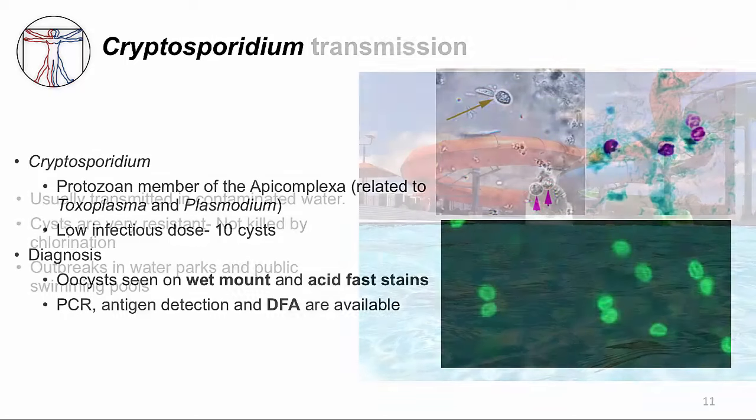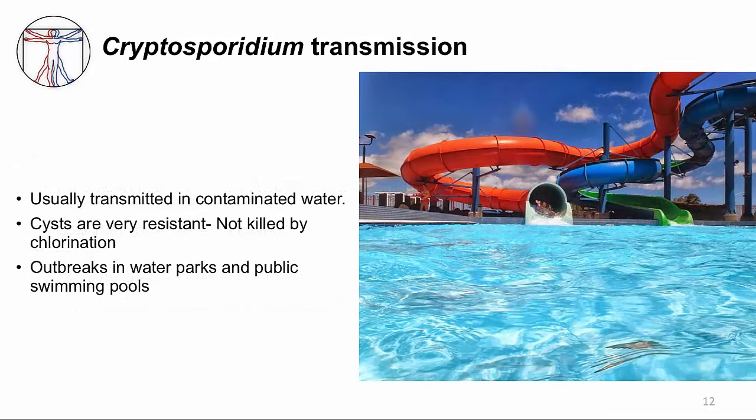Cryptosporidium is usually transmitted in contaminated water. The hallmark of Cryptosporidium is that it has very resistant cysts that are not killed by chlorine. Classic outbreaks occur in public swimming pools, water parks, and even city fountains where children have been playing. The only way to get rid of Cryptosporidium is to filter it out of the water.